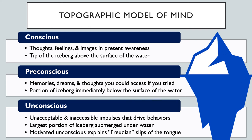Using the iceberg analogy, the conscious aspect of the mind is the peak of the iceberg — everything above the surface of the water. It's the mind we're aware of at any given moment: the thoughts, feelings, and images we're thinking about right now. You can think of our conscious mind as synonymous with awareness — what we're currently accessing and could articulate in a logical, rational manner. Immediately below the surface is the preconscious. Technically, the preconscious mind is part of the unconscious, but unlike the majority of the unconscious, it can enter our awareness. The difference is that the preconscious represents what we can access, while the unconscious reflects what is inaccessible to our conscious mind.